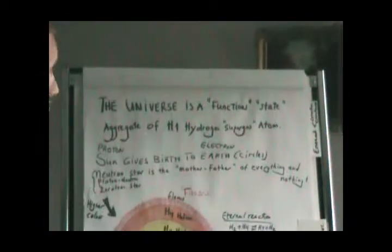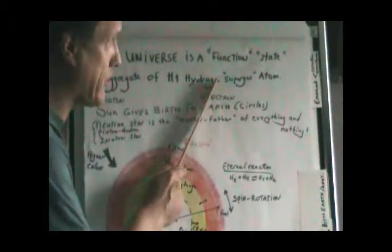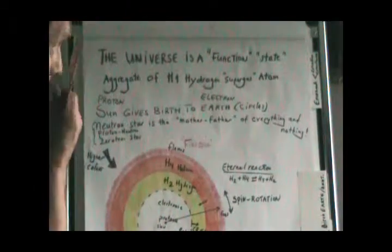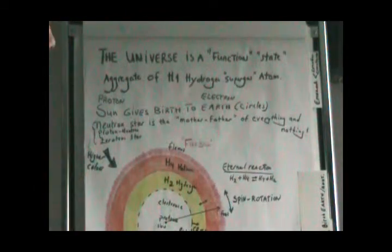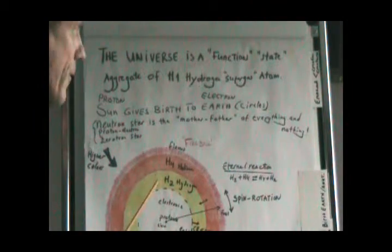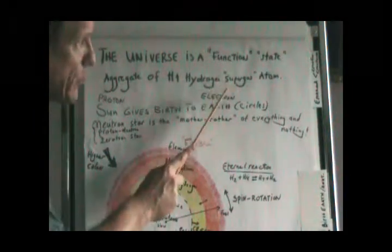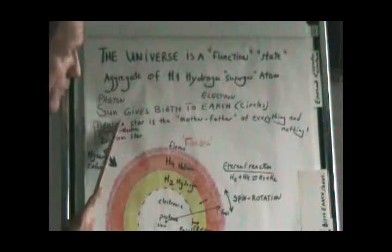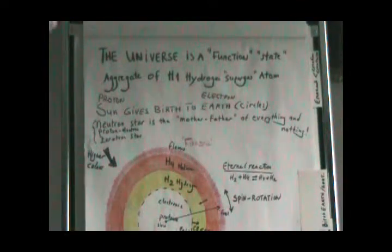The universe is a function or state of the H1 hydrogen super gas atom. The proton, or the sun, gives birth to the earth or the electron. The electron and earth circle around the proton and the sun, meaning they come from there.